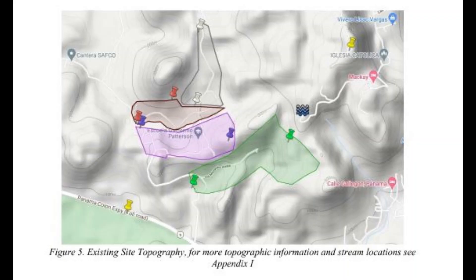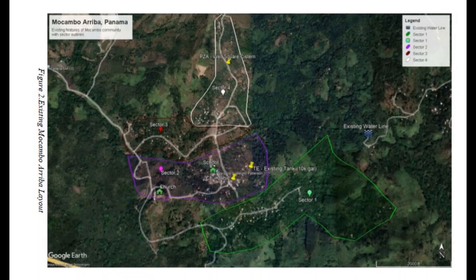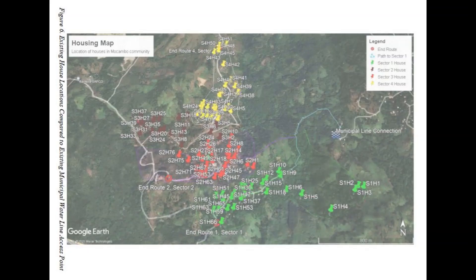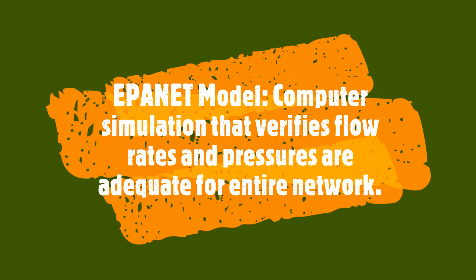It was challenging to try to get topographic information, not only on each home, but the routes that are available for pipeline access and egress. Without this data, they could not have completed the design.